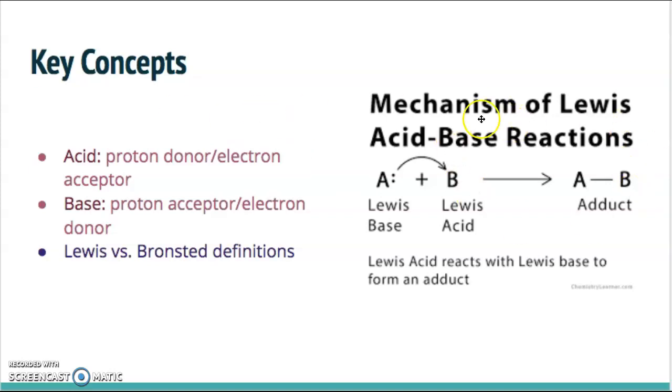Over here is a diagram of what a basic general acid-base reaction would look like. This is giving it in terms of Lewis acids and bases. The Lewis base is the electron donor to the Lewis acid, which accepts the electrons, and then it gives you your products.